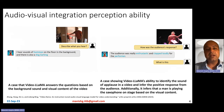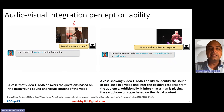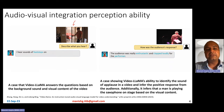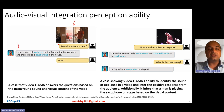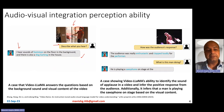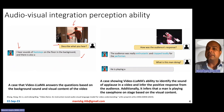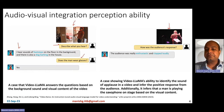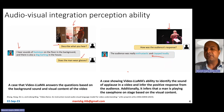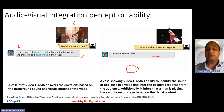Here are some examples of the abilities of the VideoLlama model. It has audio-visual integration perception ability. For example, given a video of a guy opening a door making sounds, you can ask the model 'describe what you hear' — it can say 'I hear sounds of footsteps on the floor in the background, there's a dog barking in the house.' When asked 'does the man wear glasses?' the model correctly says yes. VideoLlama answers questions based on background sound as well as visual content. In another video, a guy on stage gets a loud applause — asked 'how was the audience response?' it says 'enthusiastic, clapped loudly.' Asked 'what is the man doing?' it correctly says 'he's playing a saxophone.'